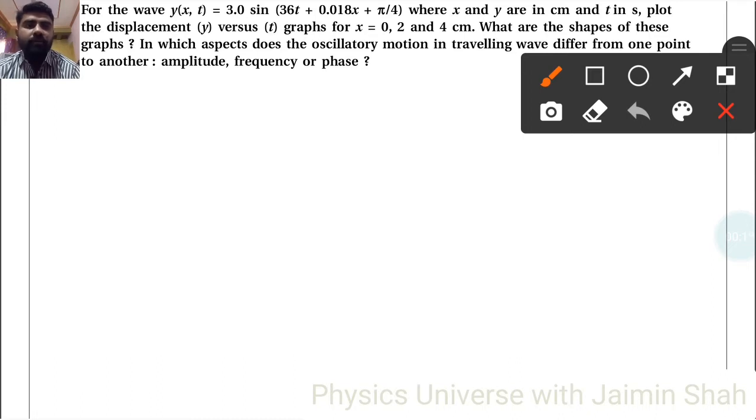2 and 4 centimeters. What are the shapes of these graphs? In which aspect does the oscillatory motion in traveling wave differ from one point to another: amplitude, frequency, or phase?